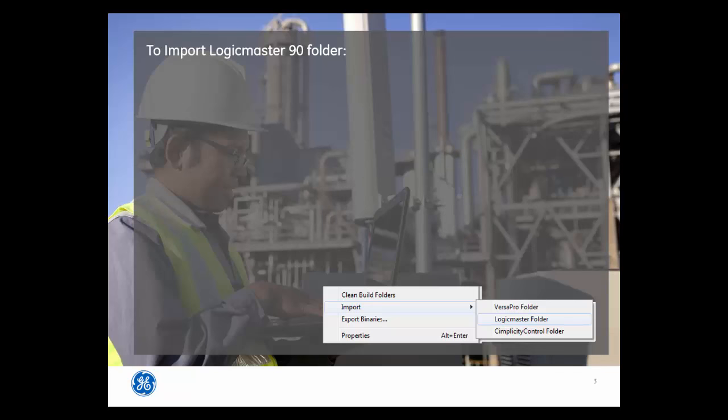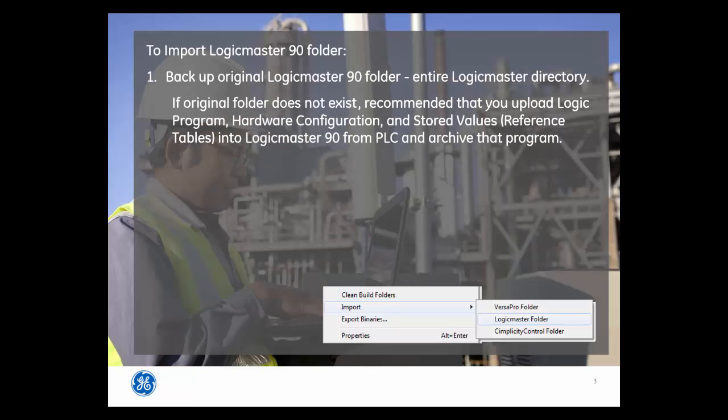To import a Logic Master 90 folder, follow these steps. First, back up the original Logic Master 90 folder — for example, zip up the entire Logic Master directory. If the original folder does not exist, we recommend that you upload the logic program, hardware configuration, and stored values, or reference tables, into Logic Master 90 from the PLC and archive that program.